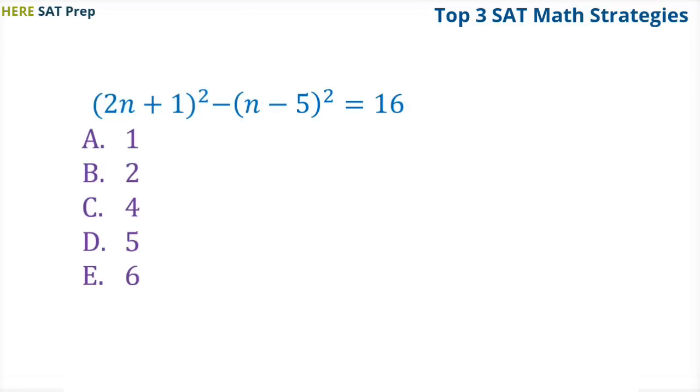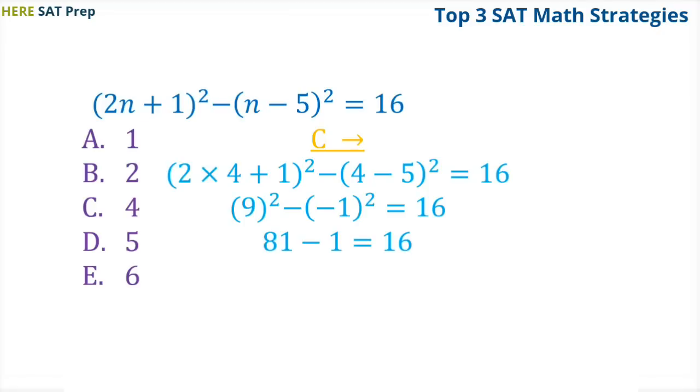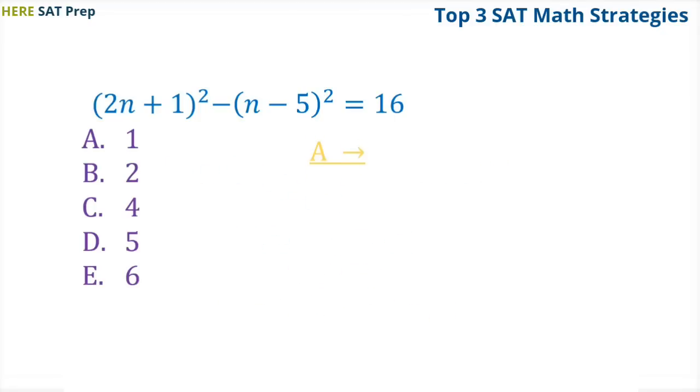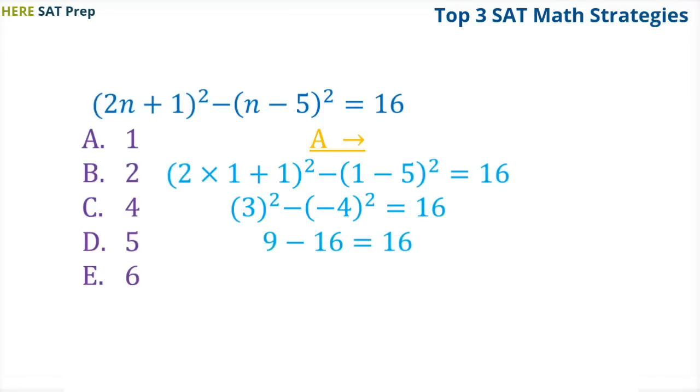So let's start by trying choice C, which is four. When we plug four in, we end up getting nine squared minus negative one squared equals sixteen, which simplifies to eighty-one minus one equals sixteen, which is eighty equals sixteen, which doesn't work. We say that eighty is too big, so let's try one of the smaller choices. Let's try A by plugging one back into the original equation. When we do this, we end up getting three squared minus negative four squared equals sixteen, which simplifies to nine minus sixteen equals sixteen, which simplifies to negative seven equals sixteen, which doesn't work either.